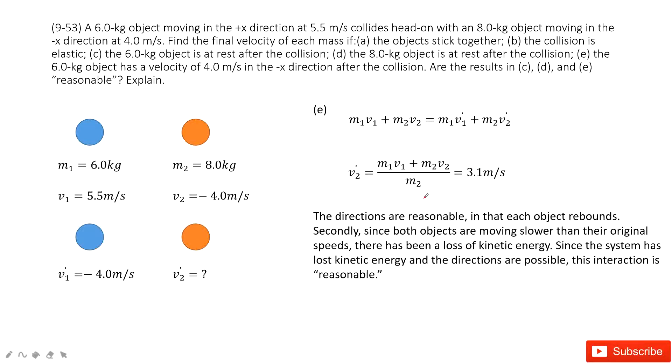The next one is, it tells you V1 prime is negative 4 meters per second. Can you find V2 prime? Sure, this one is still the application about linear momentum and input the known quantities in the final answer.